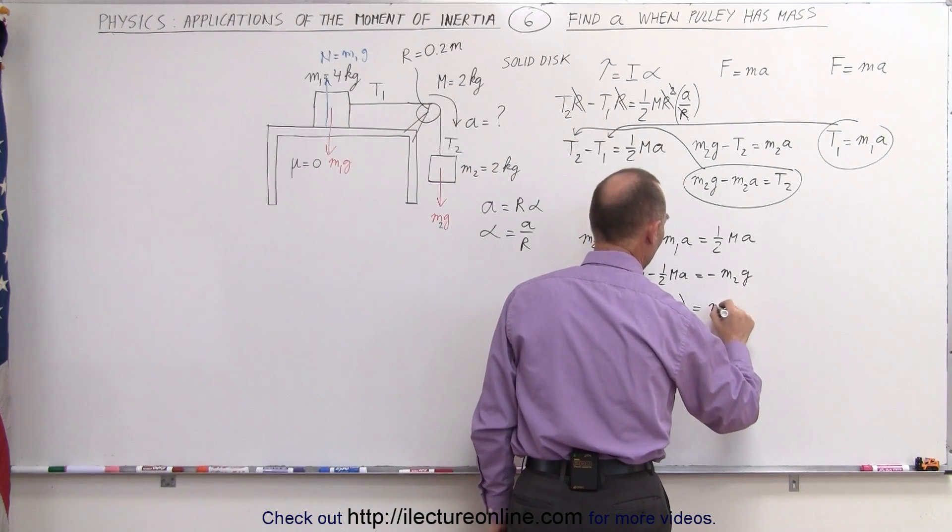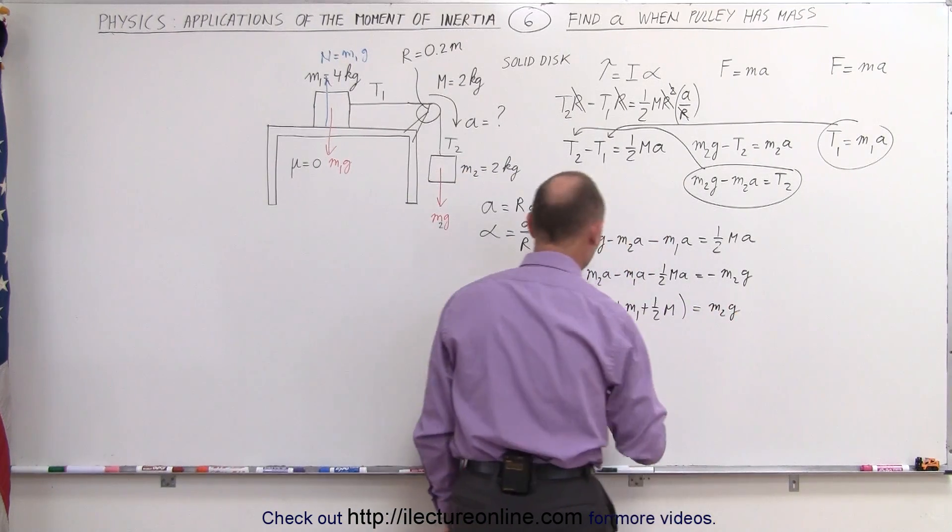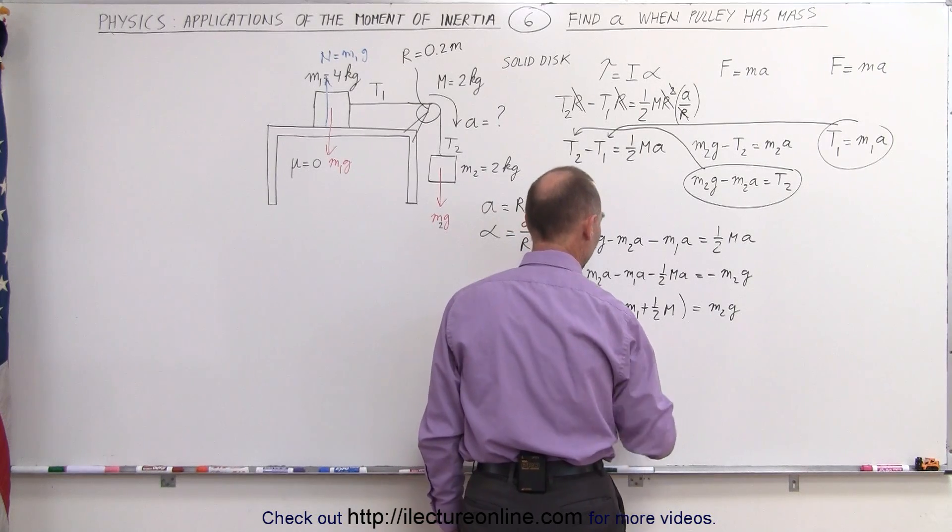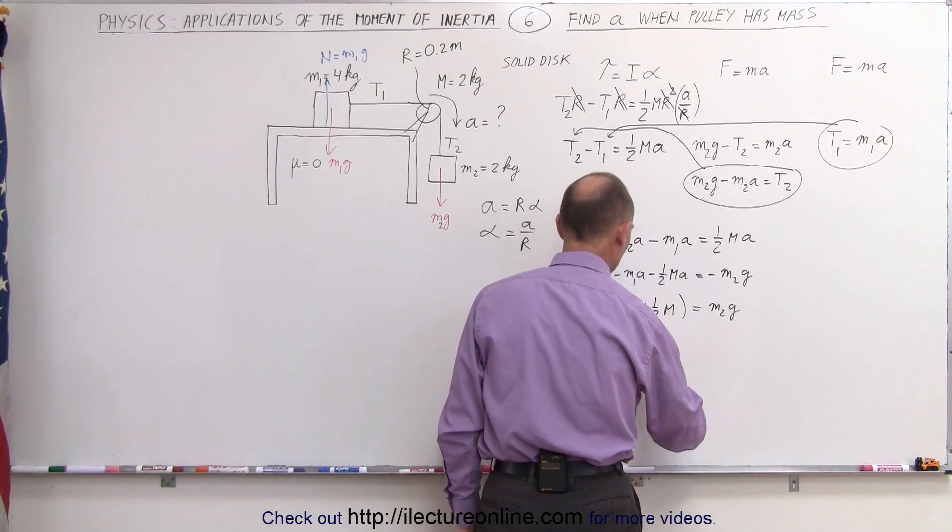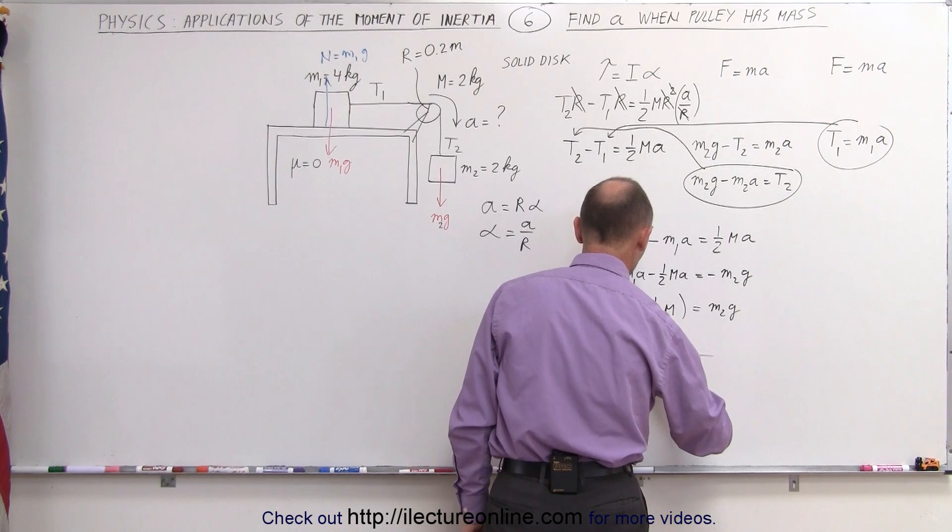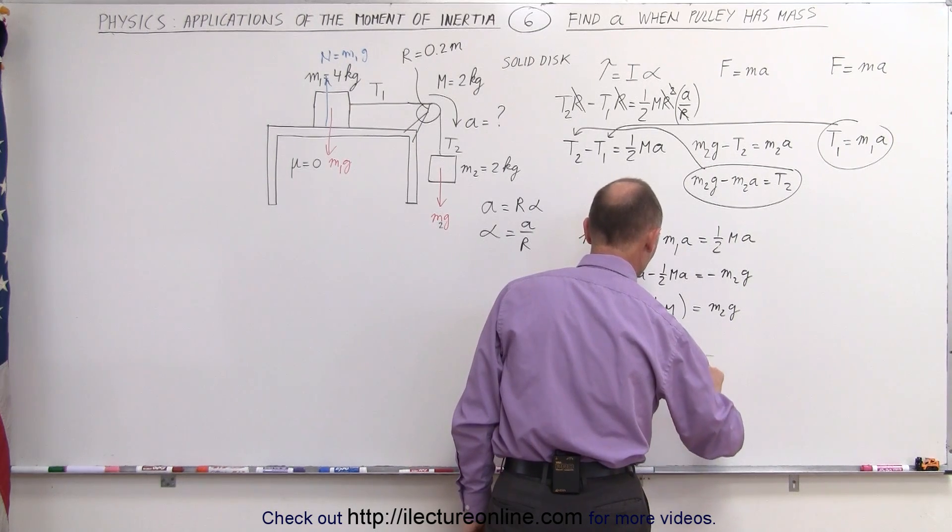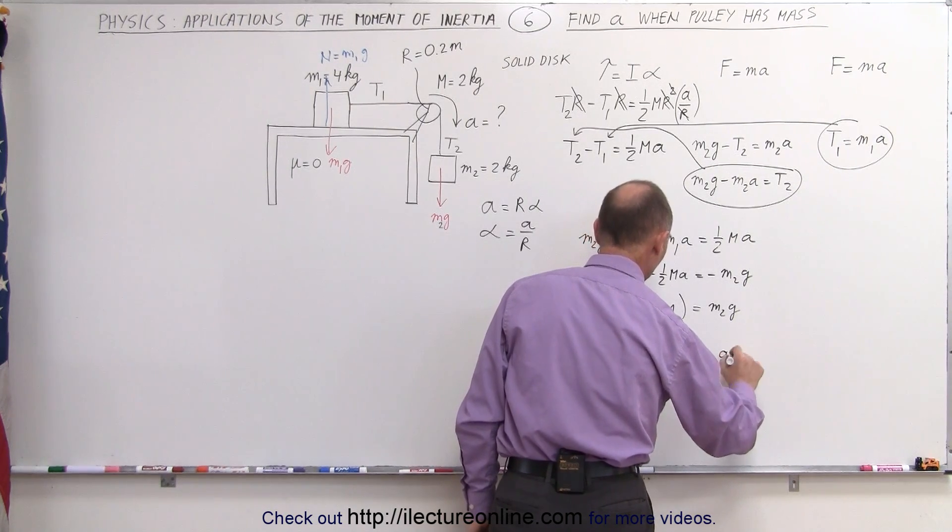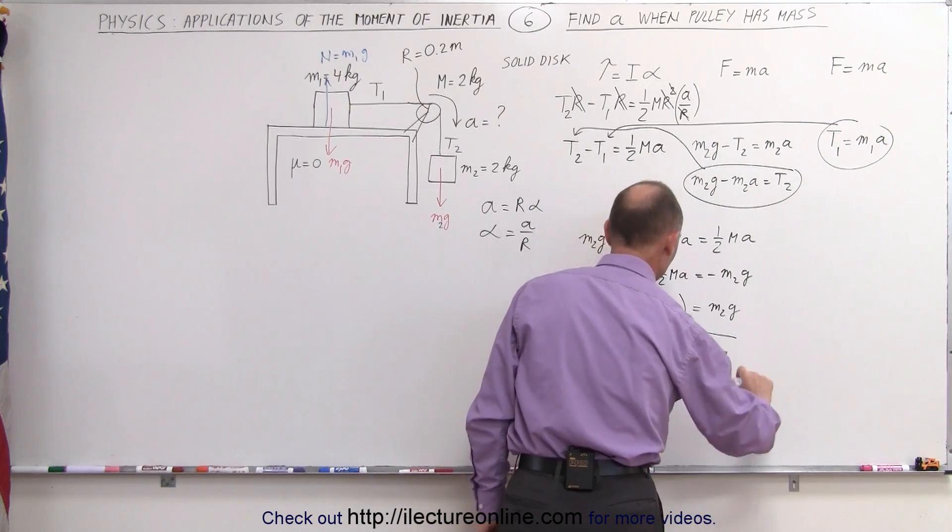And that equals then M2g. And finally, the acceleration of the whole system is equal to the ratio of M2 divided by M2 plus M1 plus one-half the mass of the pulley times g. And that would be the acceleration.